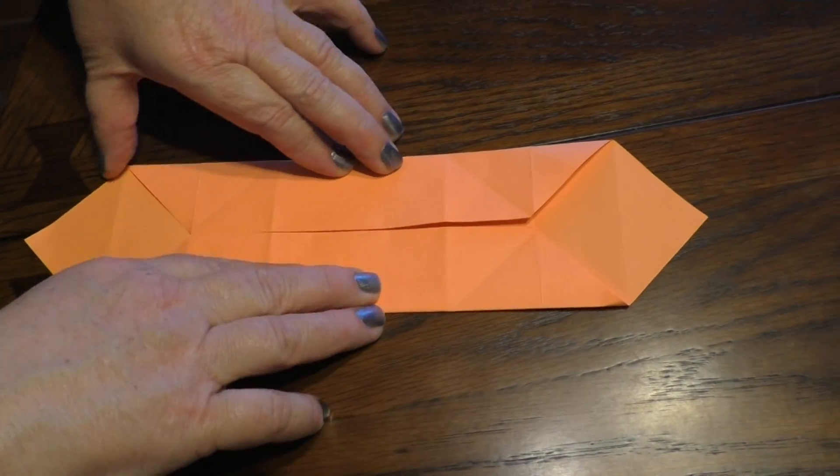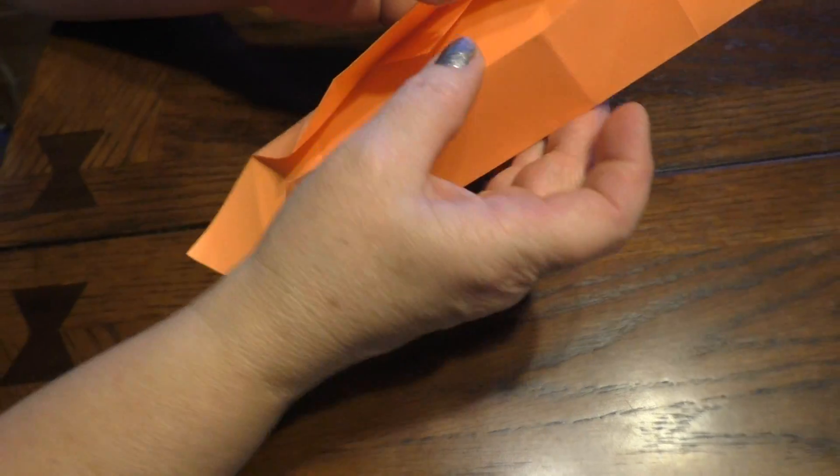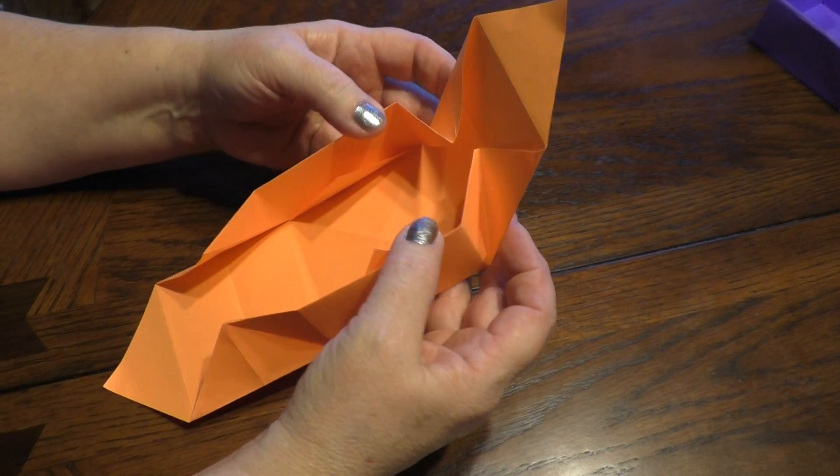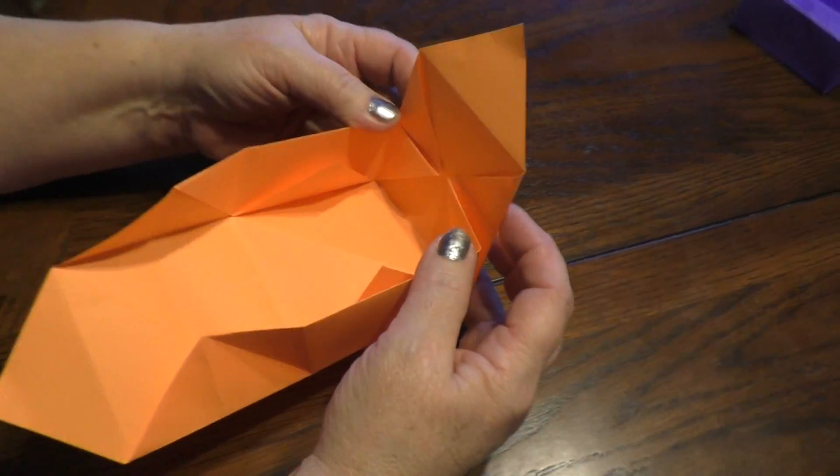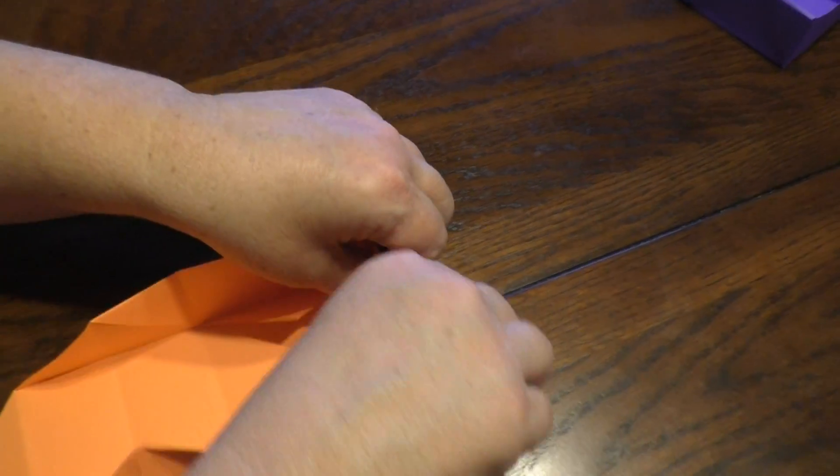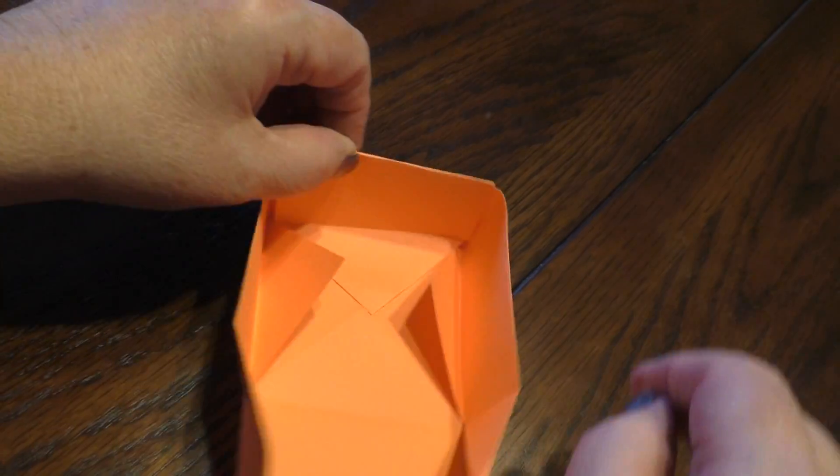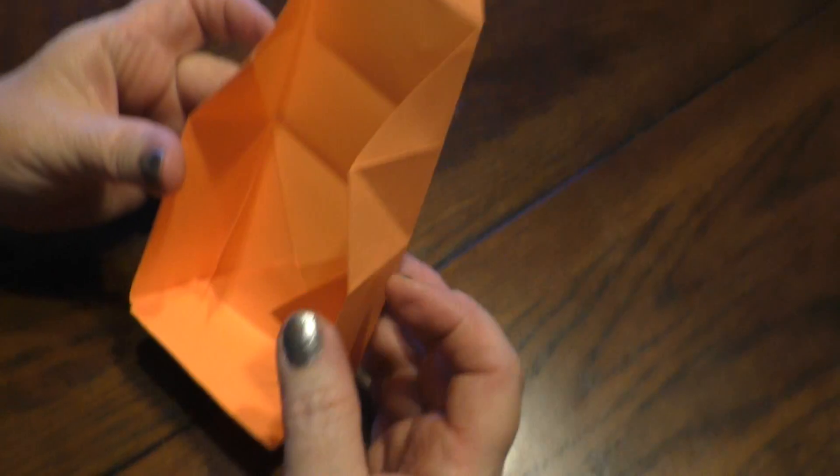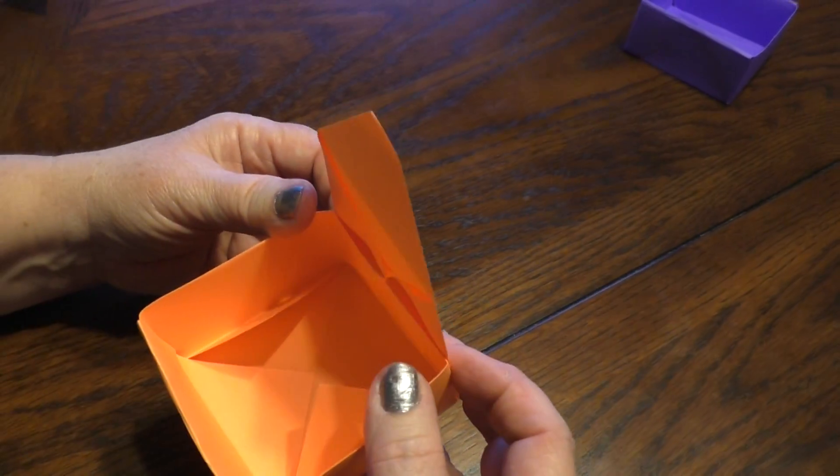Now, this is where it gets really, really cool. Now, watch this. You take your thumbs and you kind of push down like that. And look at that. Watch this side. Look how it wants to be a box. Check that out. It all has to do with your crease folds.